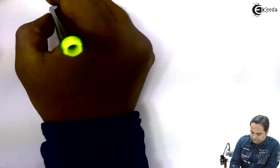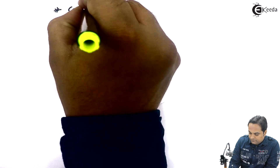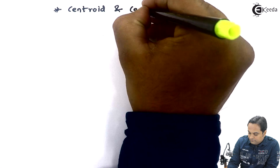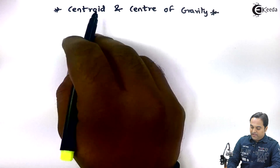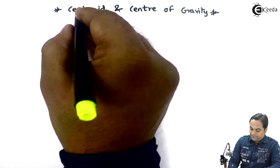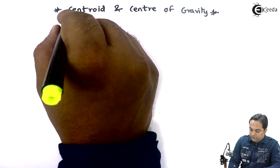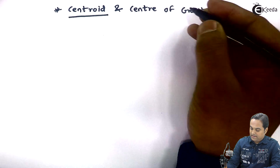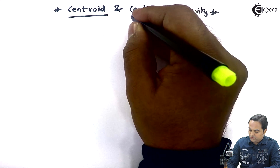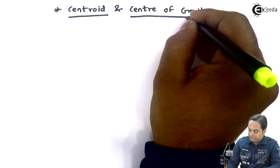Let us take the new chapter in Mechanics. The name of the chapter is Centroid and Centre of Gravity. Here we have the first part as Centroid and the second part of the chapter is Centre of Gravity.